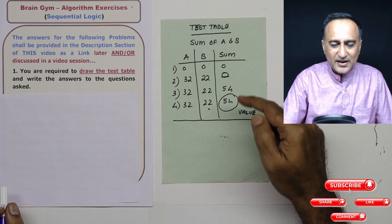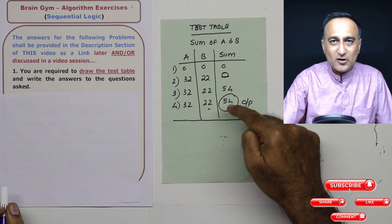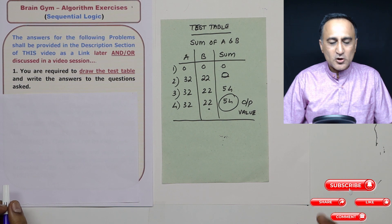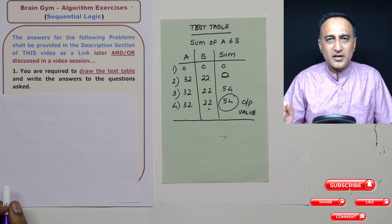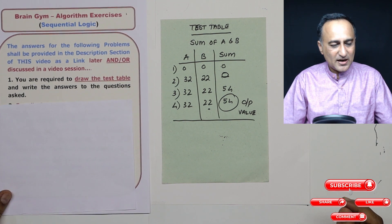And automatically at any step, if you're not getting the desired or expected result, that means your logic is wrong. So for each and every question, I expect you to draw the test table and write the answers to the questions asked.